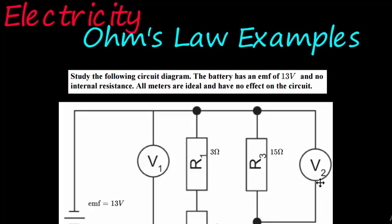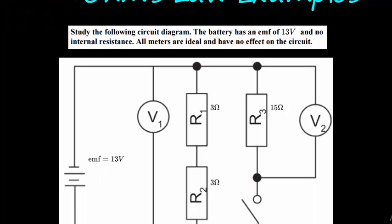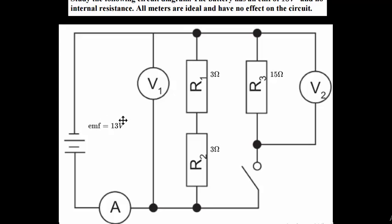Now we're getting into the more complex calculations. The question says: study the following circuit diagram. The battery has an EMF of 13 volts. EMF — electromotive force — means it is the energy that causes a current to flow. 13 volts means that every coulomb of electrons has 13 joules of energy when it comes out.